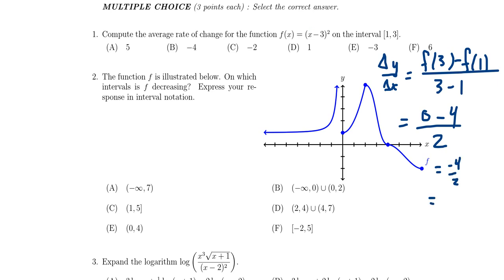That simplifies to be negative 4 over 2, or better yet, it becomes negative 2. And so we see that the correct answer is choice C, the average rate of change is negative 2.